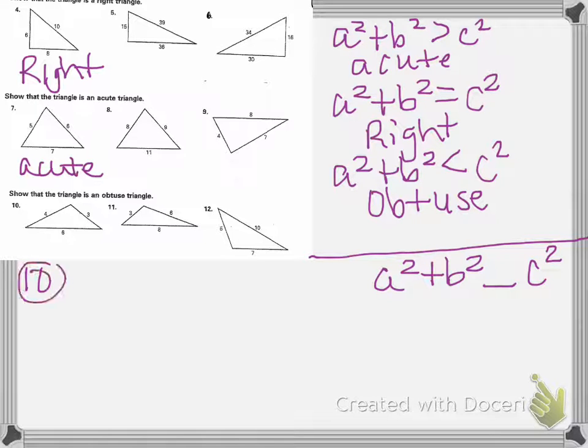Now we're going to take a look at number 10. A equals 3, B equals 4, C equals 6. And our formula is A squared plus B squared, we don't know our sign, C squared.